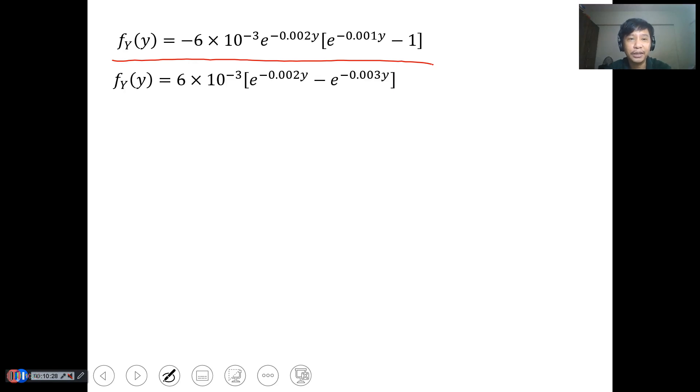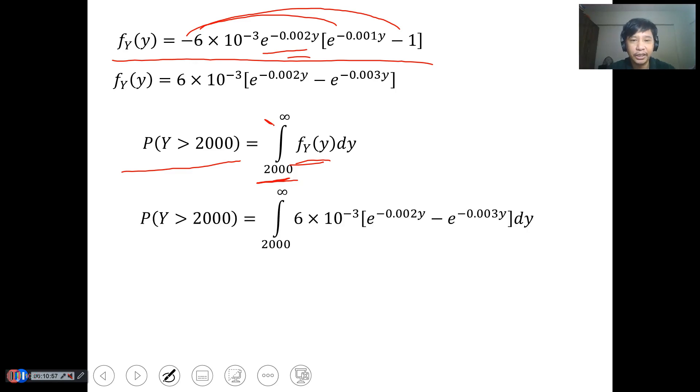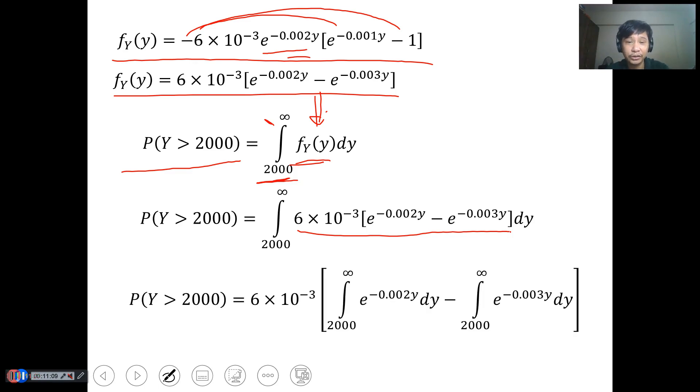We substitute back the m value. Then this will be your f_Y(y). This equals 1. Then we have this final function for y. Here, we just distribute the negative and the e^(-y) to make integration faster.